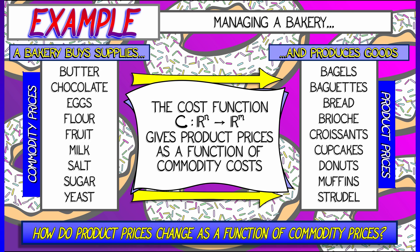Well, there's a function, a cost function that has n inputs and m outputs, and that tells you the prices of the products that you sell as a function of the prices of the inputs that you buy, of the commodities that you buy.